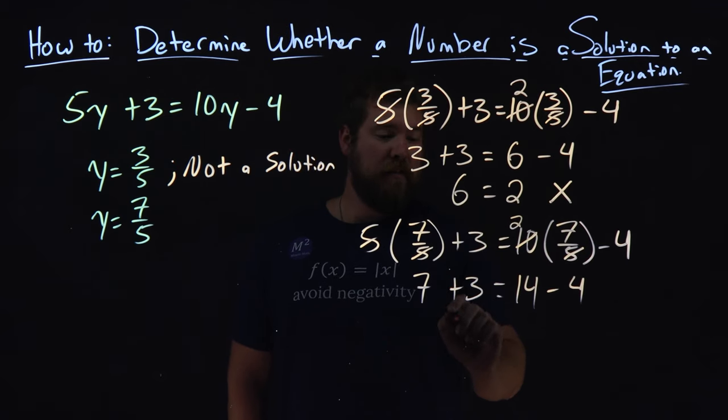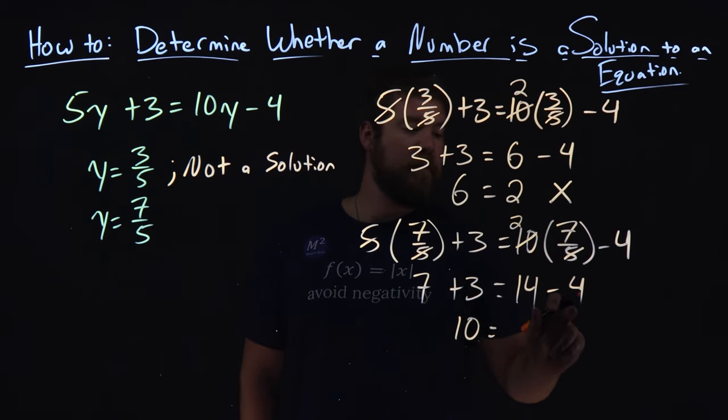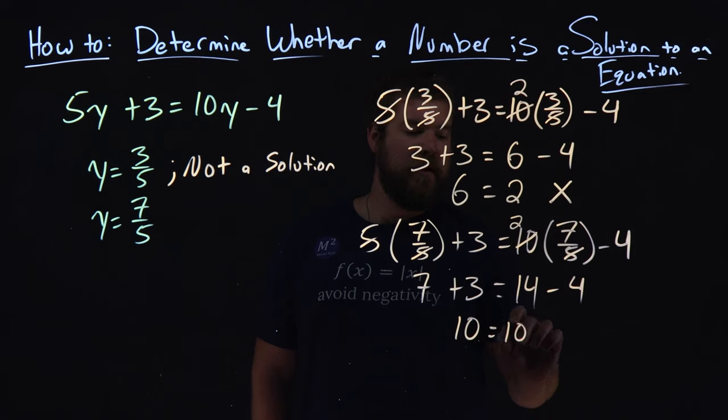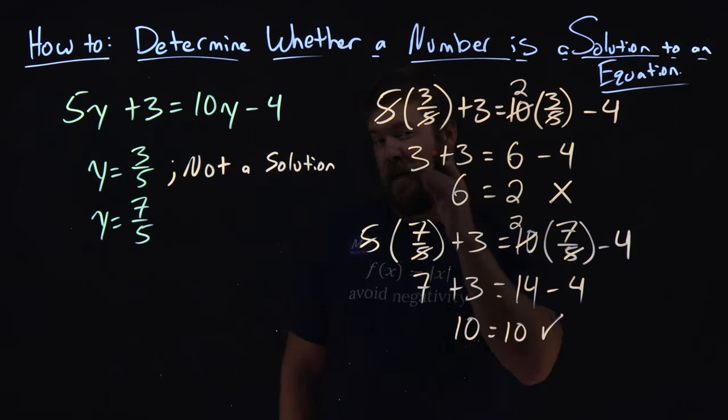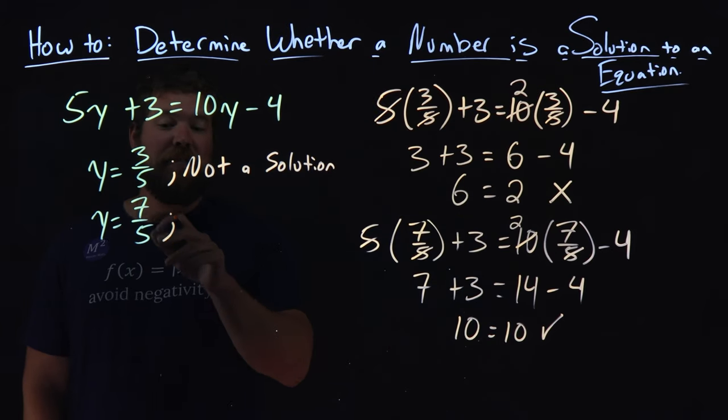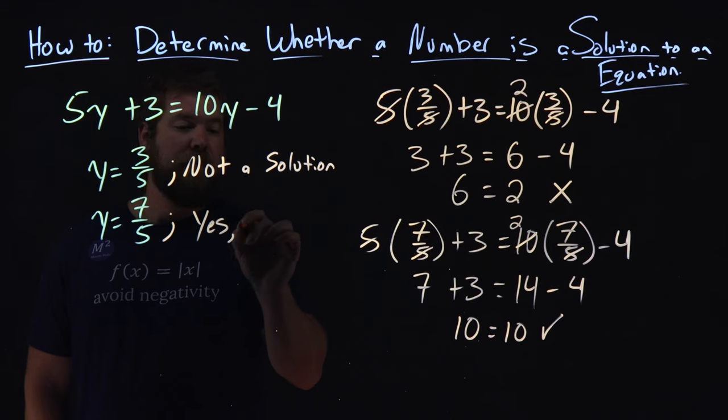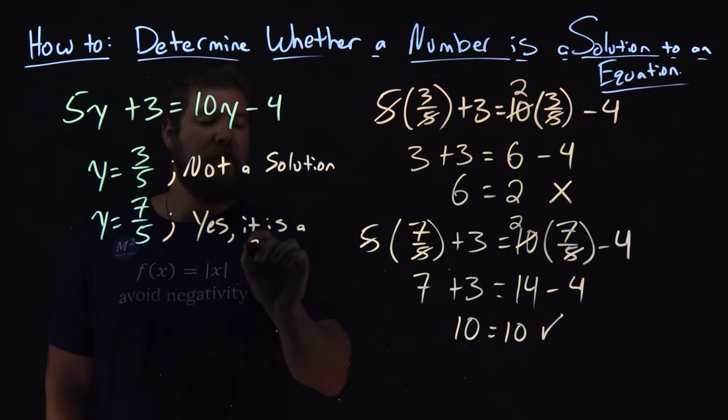7 plus 3 now, the left-hand side, is 10. And 14 minus 4 is also 10. And there we have it. We see that the left and right-hand side are both equal, meaning that 7 fifths, y equals 7 fifths, is the solution. Yes, it is a solution.